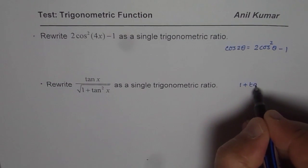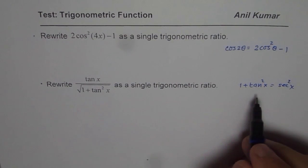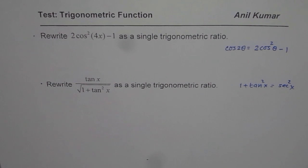In the second one, 1 + tan²x = sec²x. You can use this Pythagorean identity to solve. So now you can actually pause and then solve and find the solution.